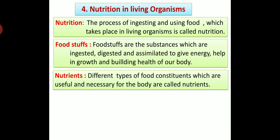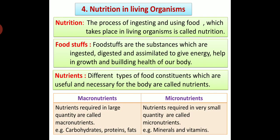Nutrients: different types of food constituents which are useful and necessary for the body are called nutrients. For example, students, you know that carbohydrates, proteins, fats, minerals and vitamins, these all are nutrients. We can classify these nutrients into two types: macronutrients and micronutrients.